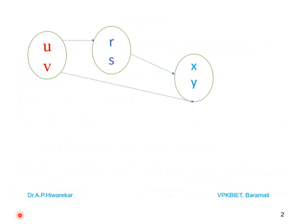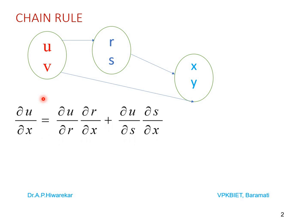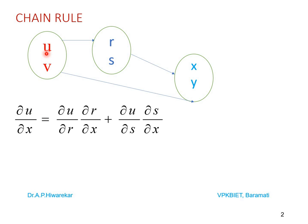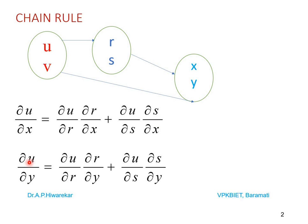First we will see the situation where u and v are functions of r and s, and r and s are functions of x and y. So we try to construct the chain rule of partial derivatives. In this case we say that u and v are composite functions of x and y. We can construct the formula: ∂u/∂x = (∂u/∂r)(∂r/∂x) + (∂u/∂s)(∂s/∂x).